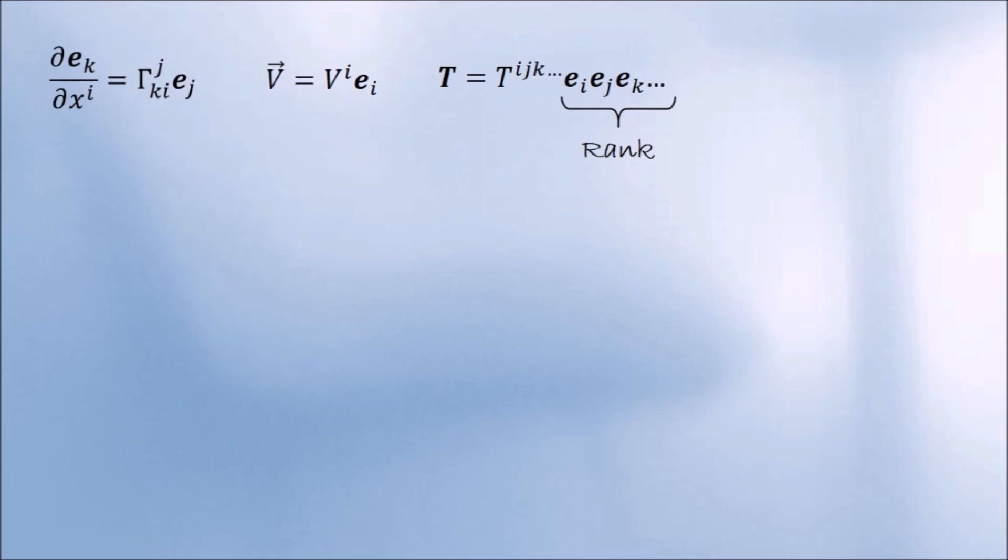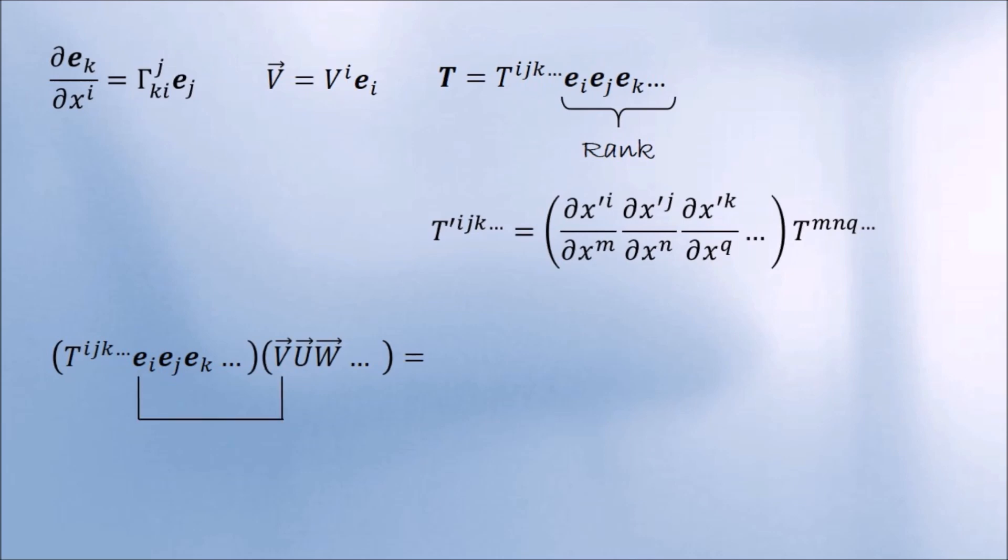Just like with vectors, we want this object to be an invariant, which means that the tensor components must transform contravariantly. You can think of this whole object as an operator acting on vectors, where the rules of operation are as follows. The first basis is dotted with the first vector, the second basis with the second vector, and so on.